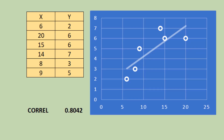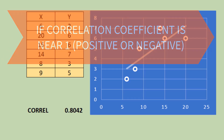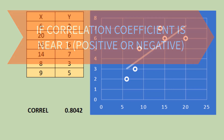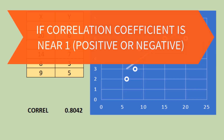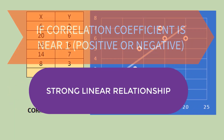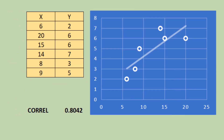Let's talk first about the strength of a linear relationship. If the correlation coefficient is near one, either negative or positive, then there is a strong relationship between two variables.